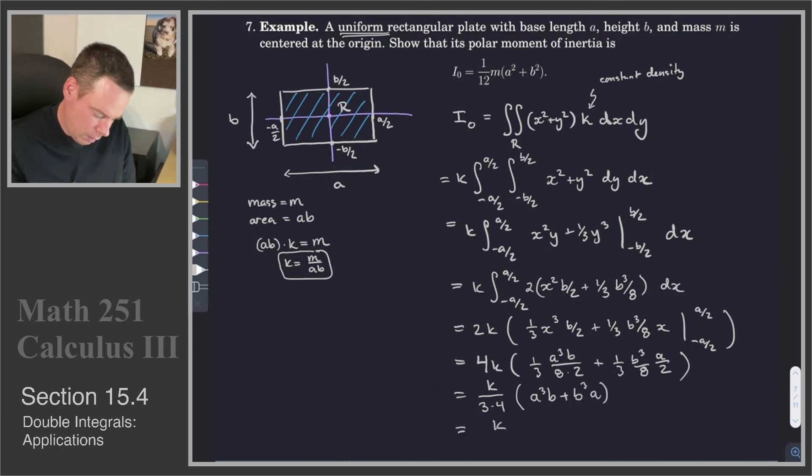And then what's left is I've got A³B + B³A. And so I've got K/12. And I can factor out an A and a B. And I'm left with A² + B².